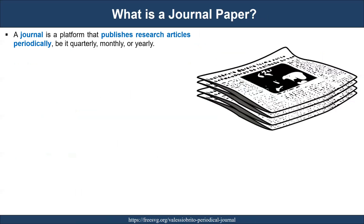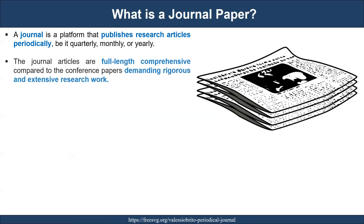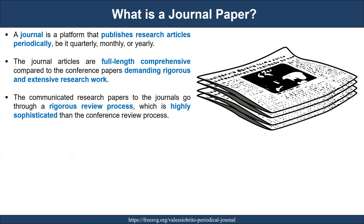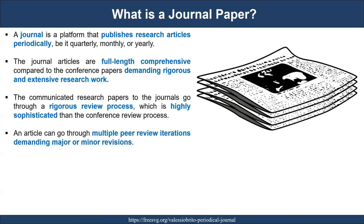On the other hand, a journal is a platform that publishes research articles periodically — it could be monthly, quarterly, or yearly volumes. Journal articles are full-length and comprehensive compared to conference papers, demanding rigorous and extensive research work. The communicated research papers to journals go through a rigorous review process, which is highly sophisticated compared to the conference review process. An article can go through multiple peer review iterations demanding major or minor revisions.